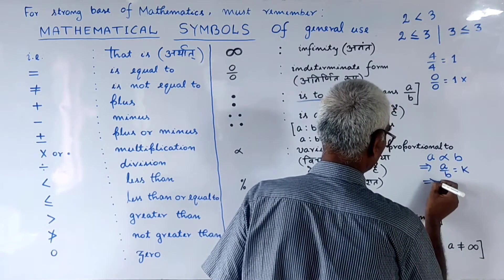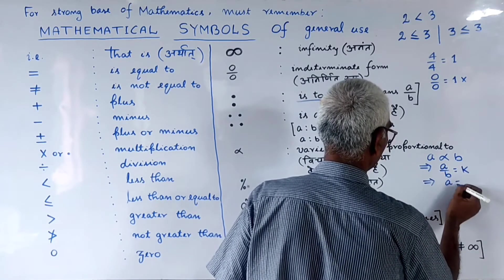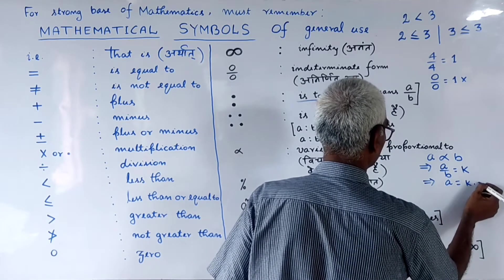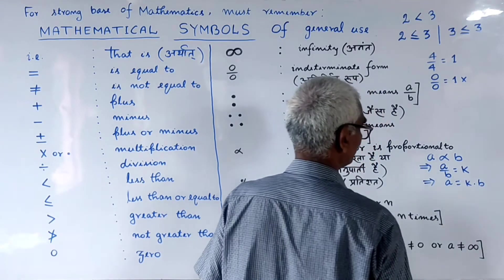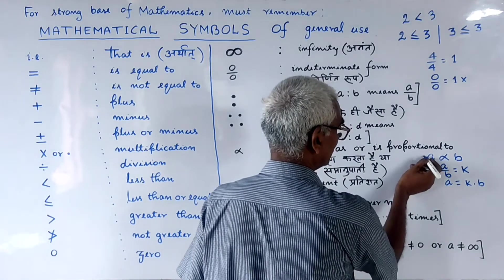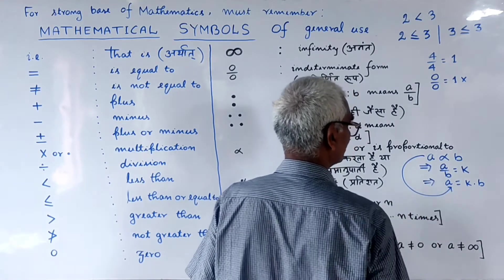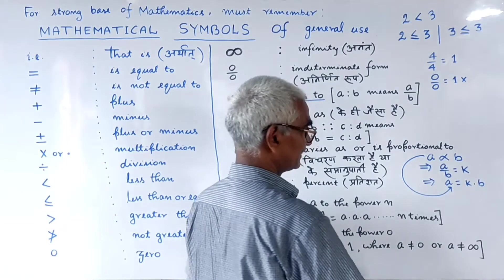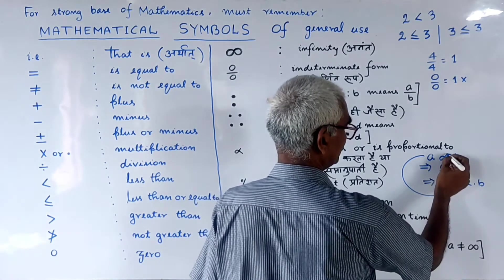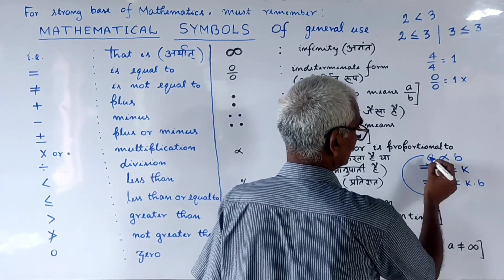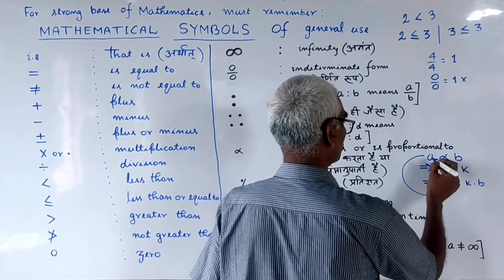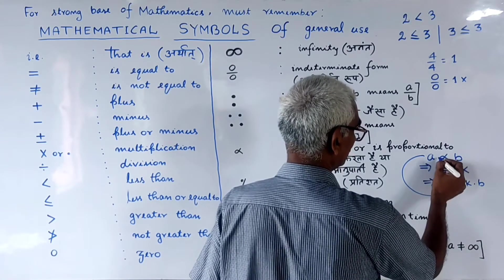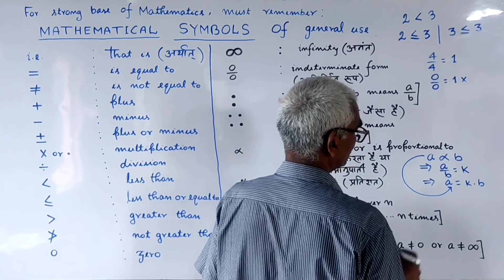This implies that A is proportional to B, meaning A divided by B is always a constant.